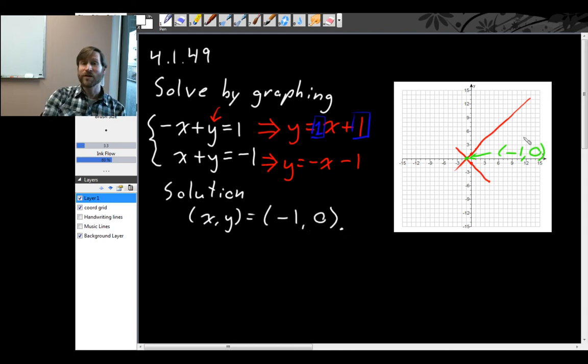Now whenever you solve a system by graphing, since graphing is an approximate method and you can't be totally exact when you graph, you really should check to see if your solution actually works. To check a solution for a system of equations, just take this point that we got, minus 1, comma 0, and plug it into both equations. So for the first equation, we get minus x, which is minus 1, plus y, which is 0. Is that equal to 1? Yes. Minus minus 1 is equal to 1, so that worked.